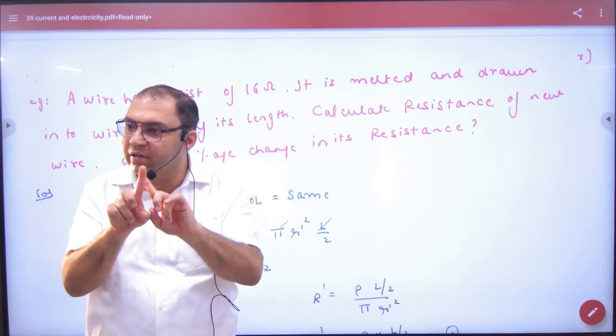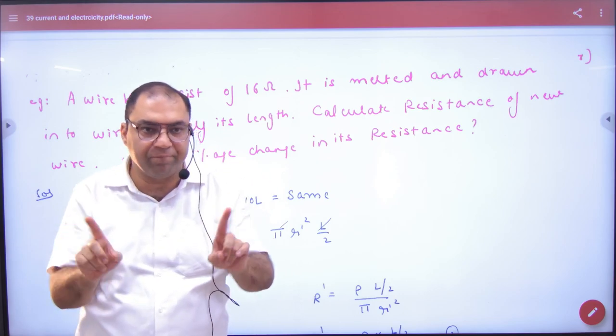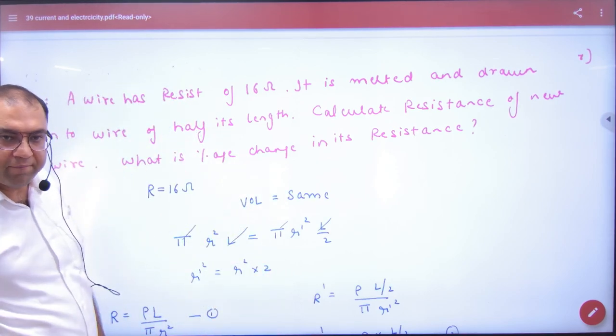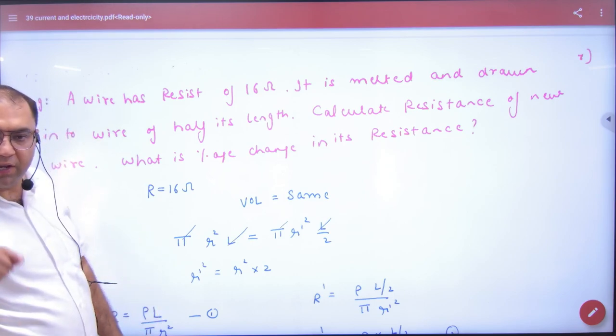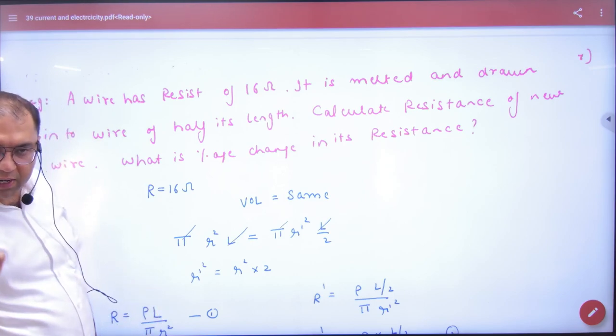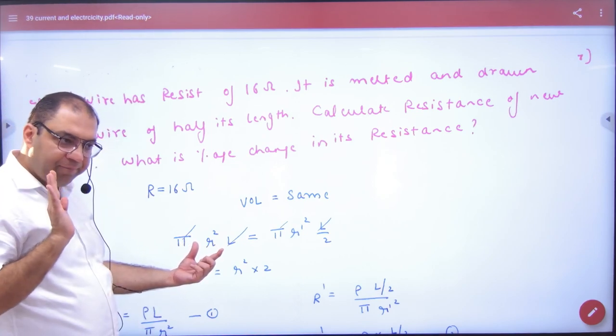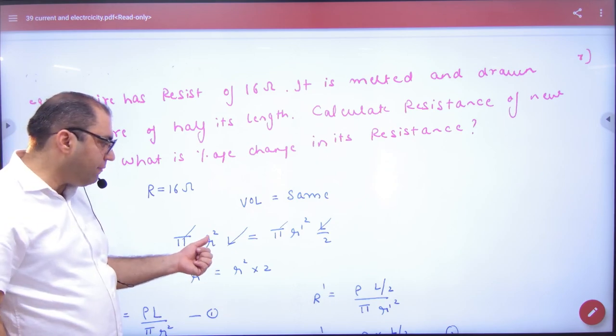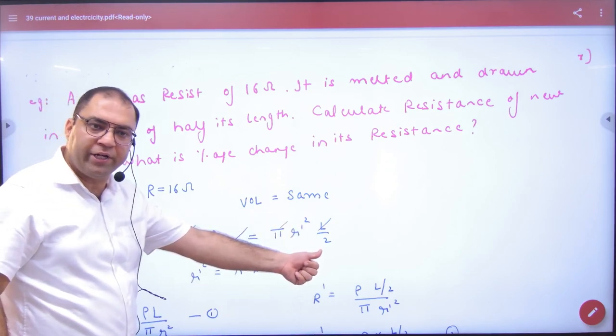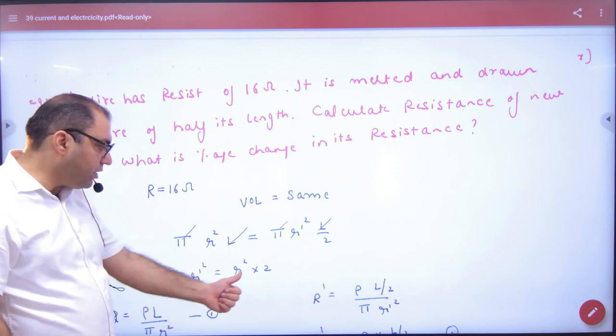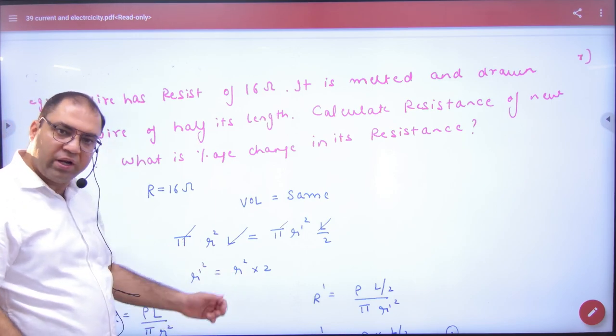So the volume remains same. The volume is same as it is. So you will know what will be new resistance and what will be percentage change in resistance? Rule number one, before melting and after melting, volume is same. So volume is πR²L before. After melting, melt karne ke baad, radius changed, length also changed to L/2. So you got the radius ratio, new radius to old radius, first equation.